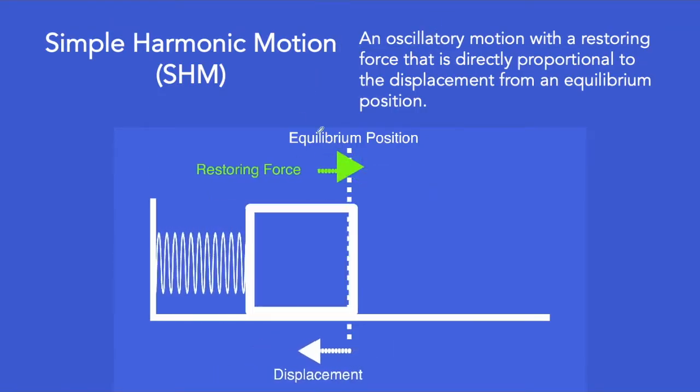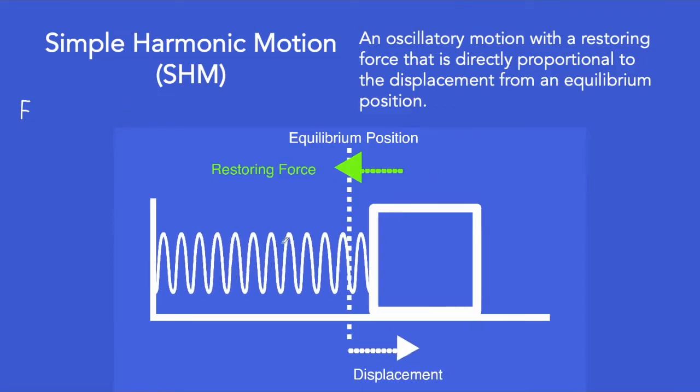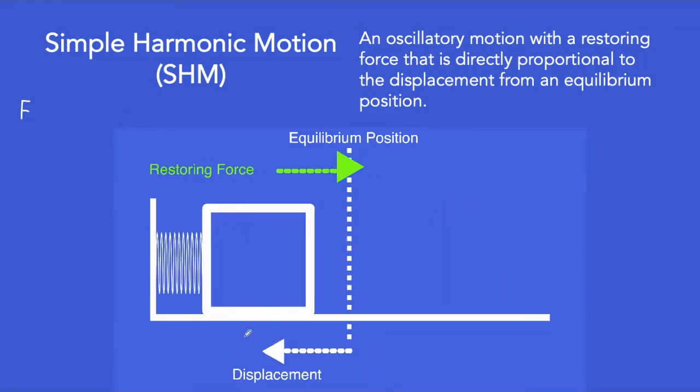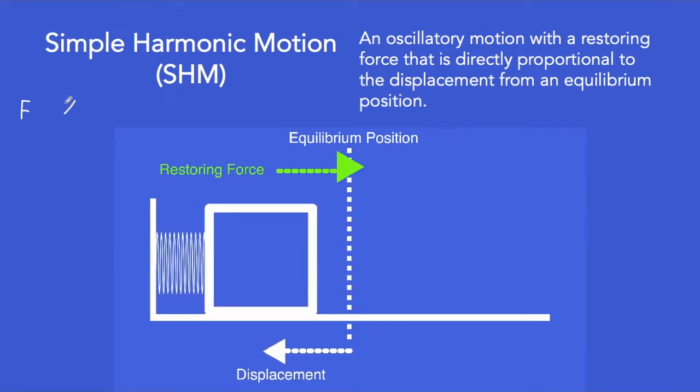In this example, if we symbolize the restoring force with F, F is directly proportional to the block's displacement from equilibrium position. Let's symbolize the displacement with x. Hence, in simple harmonic motion, the restoring force is directly proportional to the object's displacement from equilibrium position.